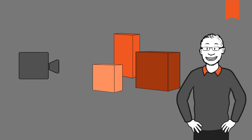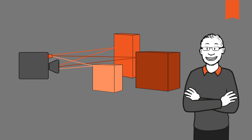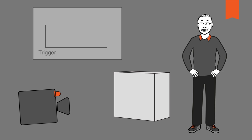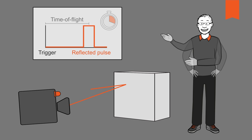In easy terms, a time of flight camera works by first illuminating the scene with a pulsed or continuous wave light source and then observing the reflected light. Time of flight cameras based on the principle of pulsed light sources measure the time that it takes for a light pulse to travel from the emitter to the scene and then back after reflection. As the speed of light is known, by using basic math, the distance to all of the points on the object surface can then be determined.